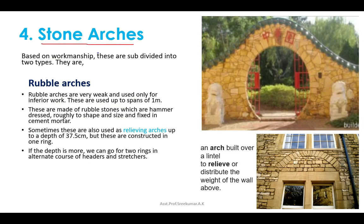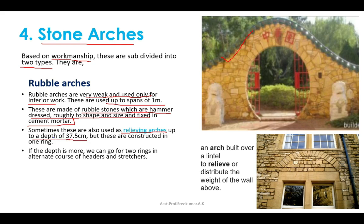Next are stone arches, subdivided based on workmanship into two types: rubble arches and ashlar arches. Rubble arches are very weak and used only for inferior work, used up to a span of 1 meter. These are made of rubble stones hammer-dressed roughly to shape and fixed in cement mortar. Sometimes they are also used as relieving arches up to a depth of 37.5 centimeters.